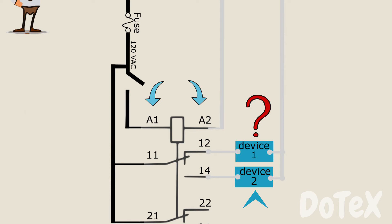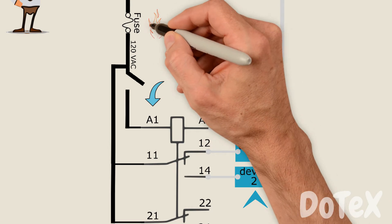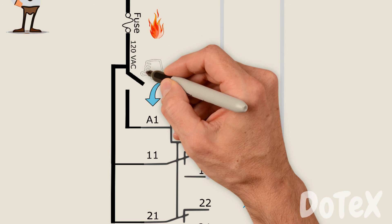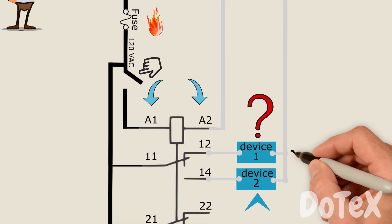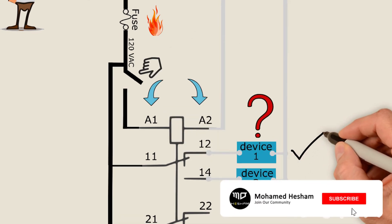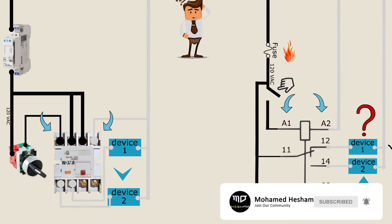Do you remember? Yes, the fuse is blowing when turning on the relay by the switch. So device 1 is already working before I pressed the switch. So let's test the connected device 2 for a short circuit through these terminals.